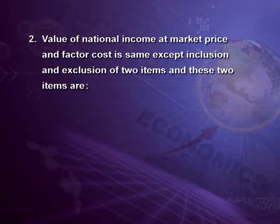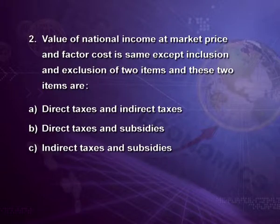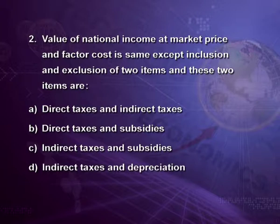Second question: the value of national income at market price and factor cost is the same except for the inclusion and exclusion of two items — what are these two items? Options: direct tax and indirect tax; direct taxes and subsidies; indirect taxes and subsidies; or indirect taxes and depreciation. The answer is indirect taxes and subsidies — that is the third option. When we add indirect taxes and subtract subsidies, we get GDP at market price.